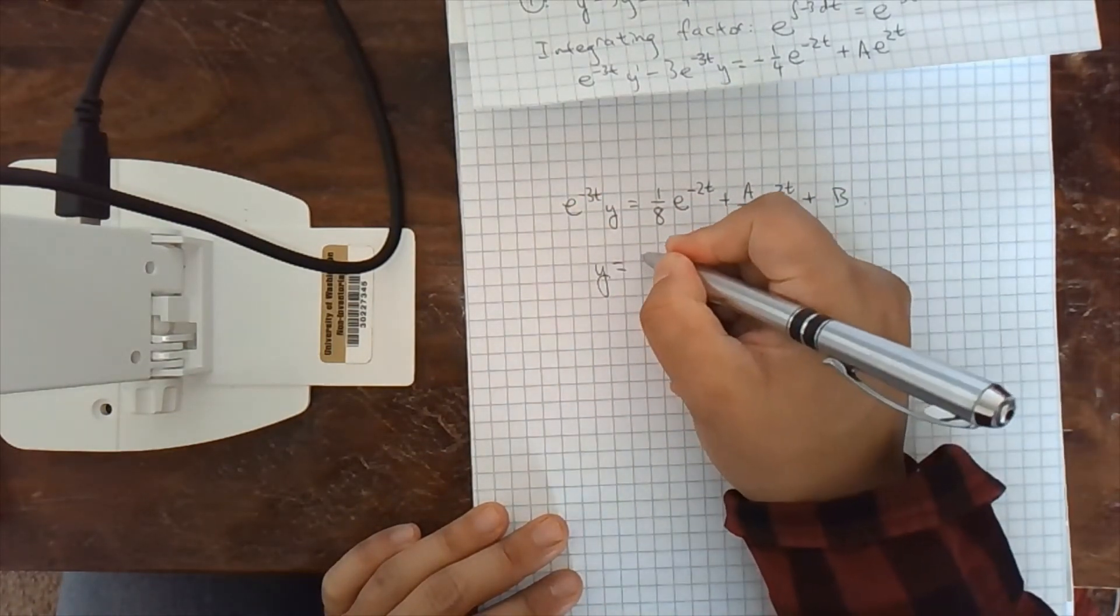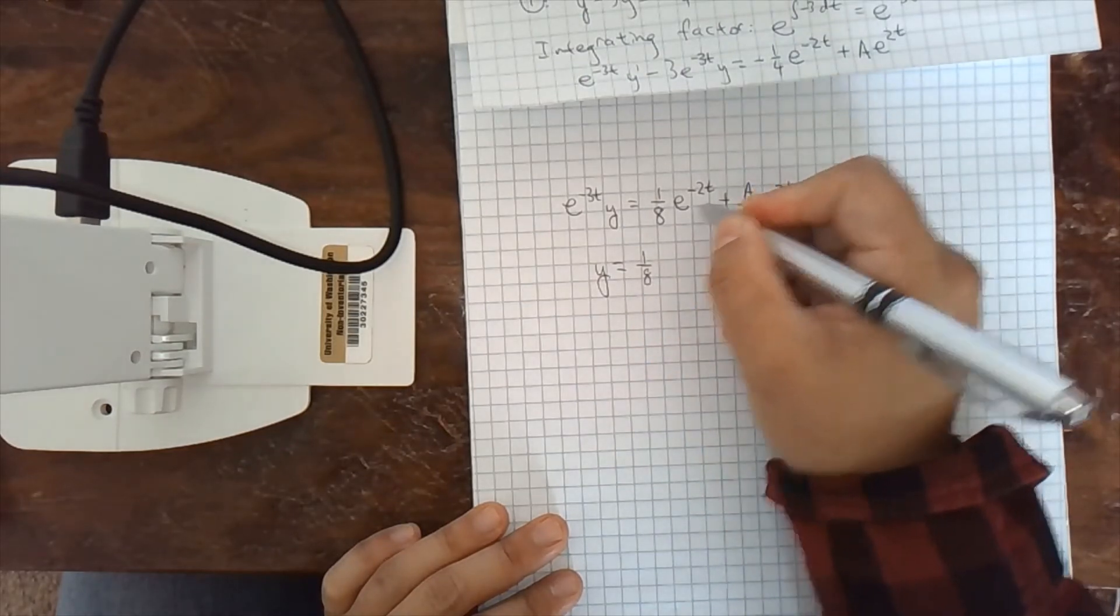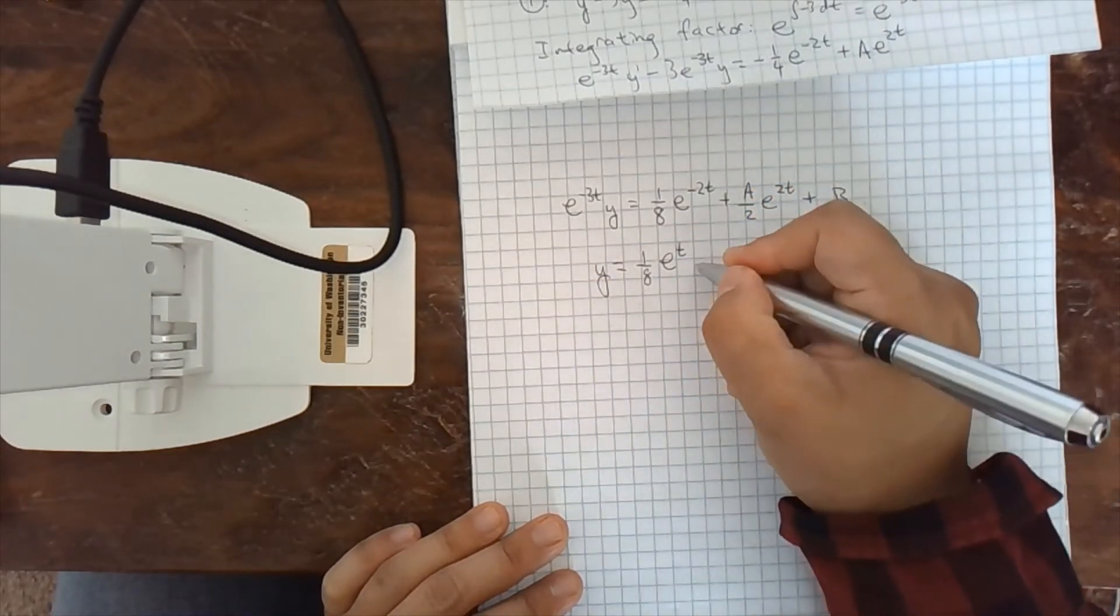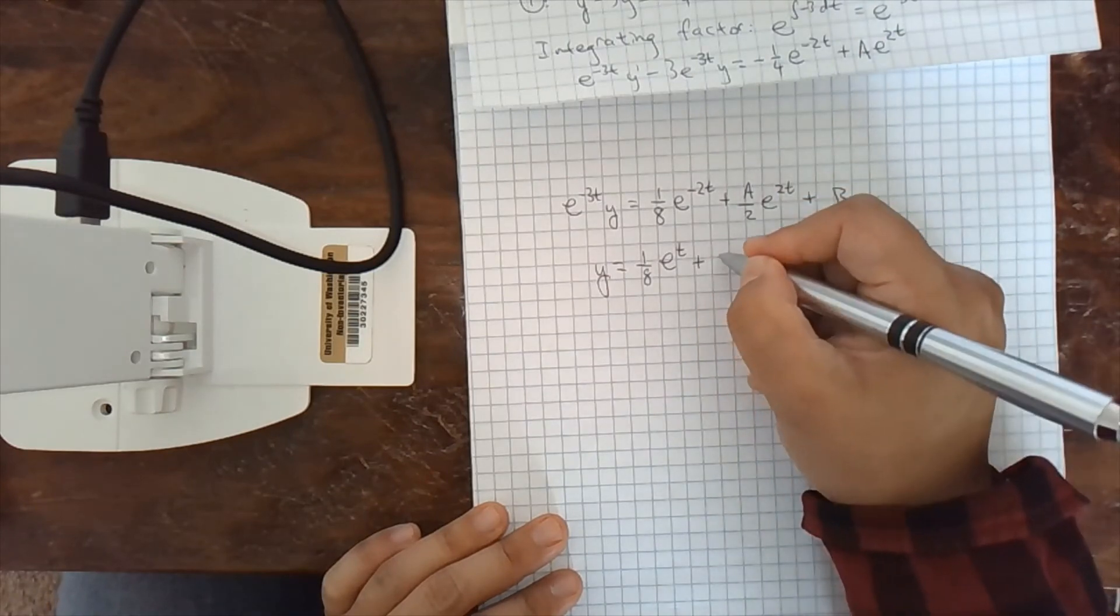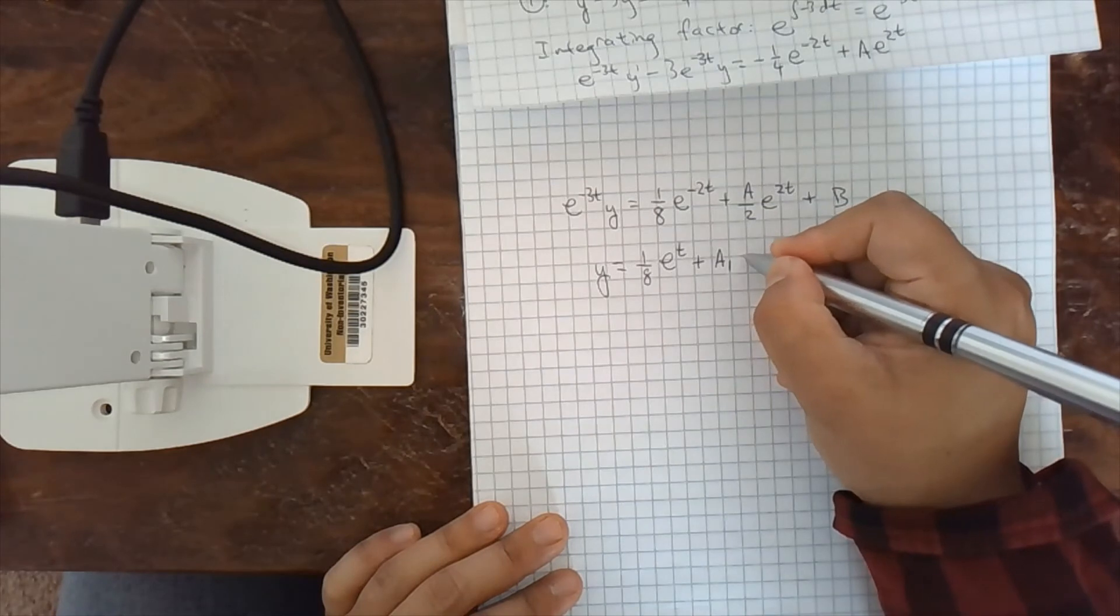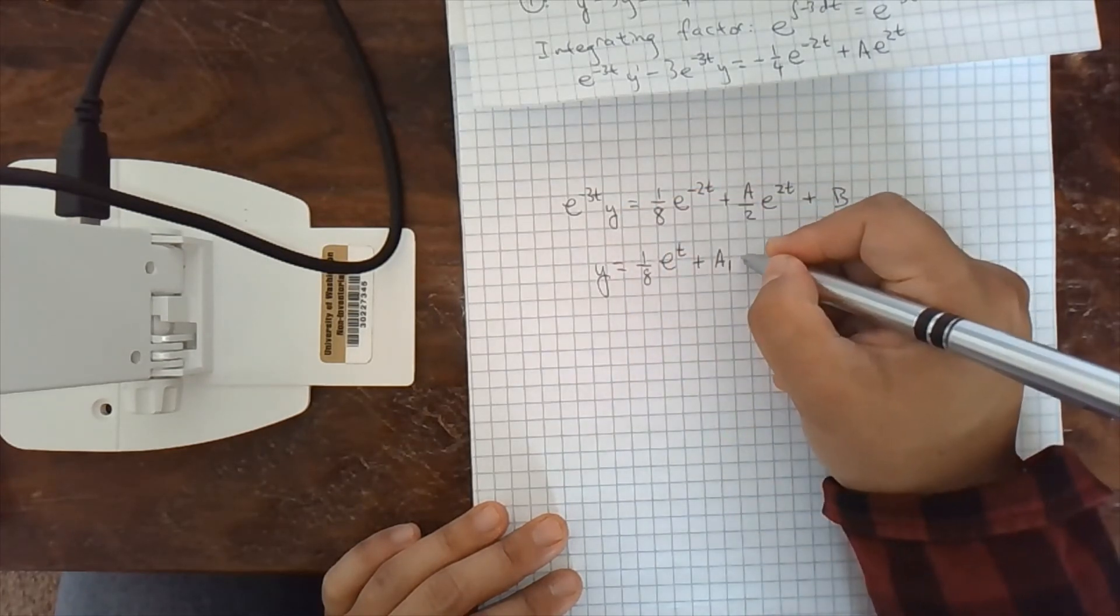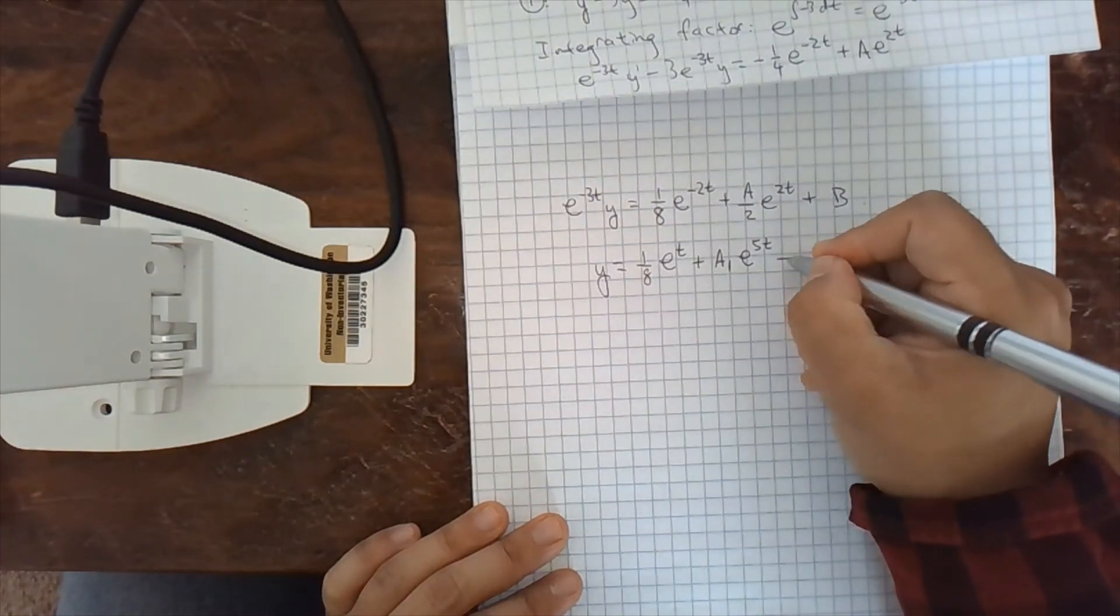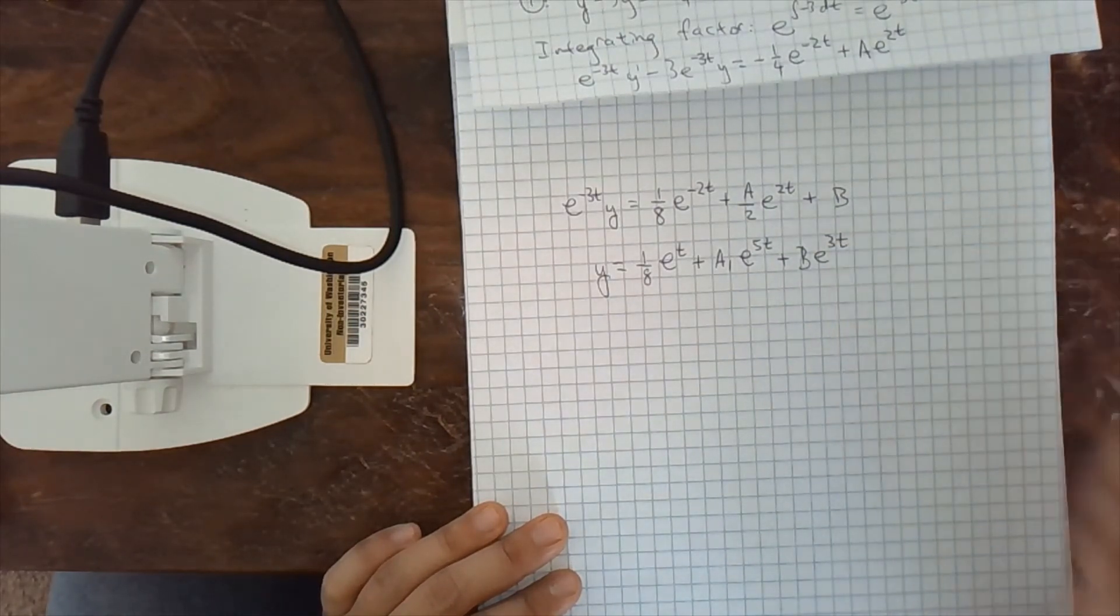So we'll get y equals 1 eighth e to the minus 2t times e to the positive 3t is e to the t plus we're going to subsume the divided by 2 into the constant. So we'll call this a1. e to the 2t times e to the 3t is e to the positive 5t. And then we get a plus b e to the 3t.